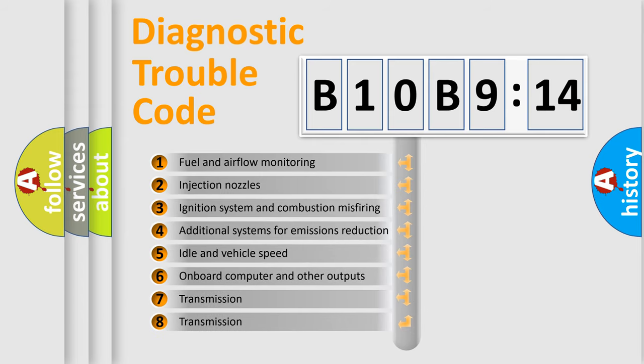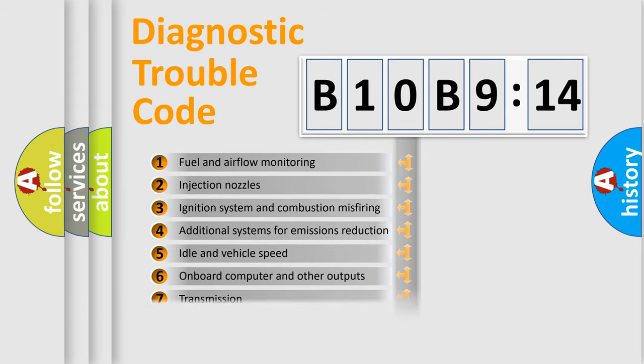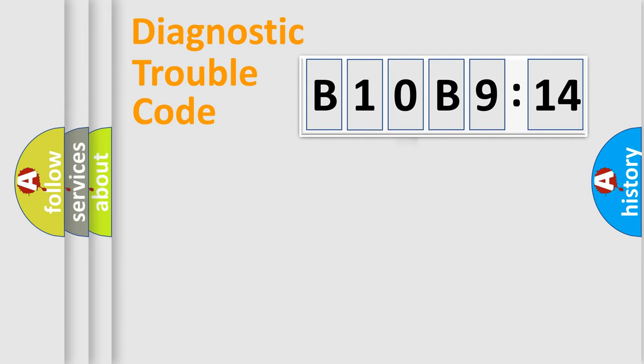The third character specifies a subset of errors. The distribution shown is valid only for the standardized DTC code. Only the last two characters define the specific fault of the group.